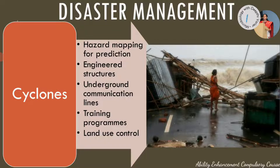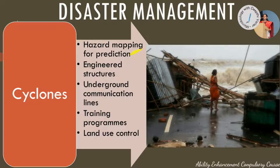One control measure for cyclones is hazard mapping for prediction, because cyclones can be easily predicted. By continuously mapping and monitoring, we can predict cyclones, their intensity, and their landfall. There are even apps that the public can download to see the movement of cyclonic winds and where and when it is going to hit land. Because cyclones are easy to predict, hazard mapping allows us to ensure people are evacuated so not much loss of life occurs. While it is difficult to save infrastructure, people and biotic life can be saved through hazard mapping.